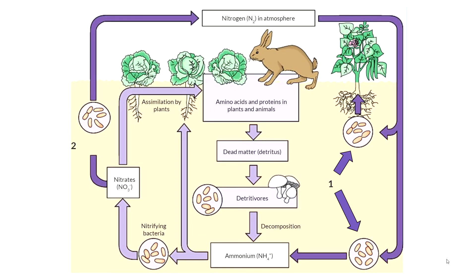Number one shows the nitrogen in the atmosphere entering the living world — this is nitrogen fixation, done by bacteria, which makes nitrogen accessible to other living organisms. The bacteria on the plant are beneficial symbionts that live inside the plants, while the free-living ones are below. Number two shows the nitrogen getting ready to leave the living world and go back to the atmosphere — that's denitrification, which is also completed by bacteria.